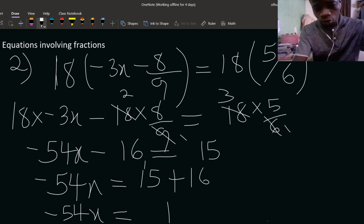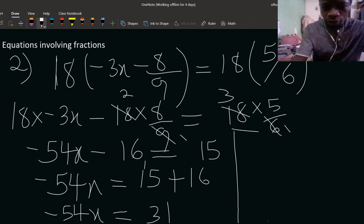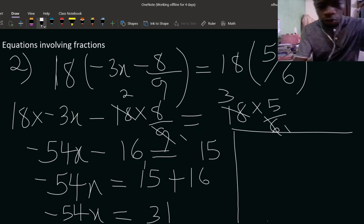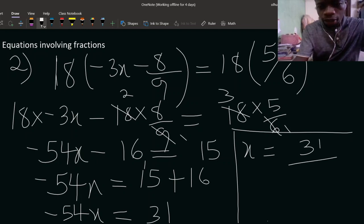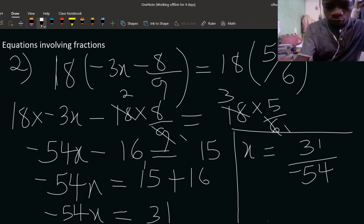15 plus 16, 5 plus 6 is 11, keep 1, 1 plus 1 is 2, that is 31. So invariably now your x will be equal to 31 over minus 54. You can't break this down, so you stop there.